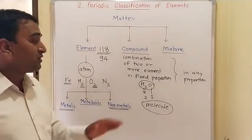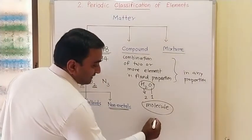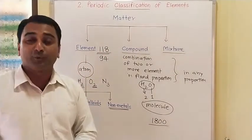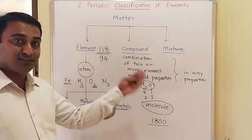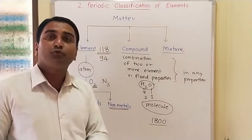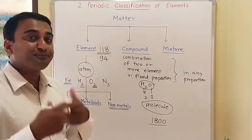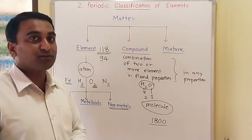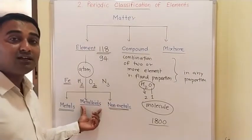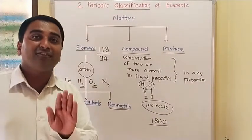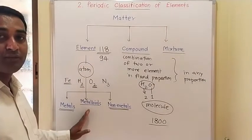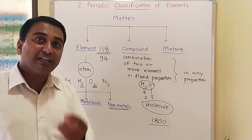So classification is necessary. What happened previously? Around 1800, only a few elements were known. Later, more discoveries occurred, and today we have nearly 118 elements. At that time there were so few elements it was not necessary to classify them. Some people tried to classify, dividing them only into metals and non-metals. Later a third group, metalloids, was added. Initially near about 30 elements were there, so classification was also limited.